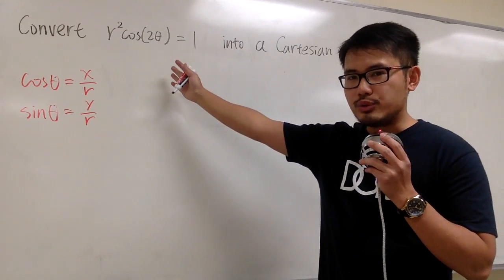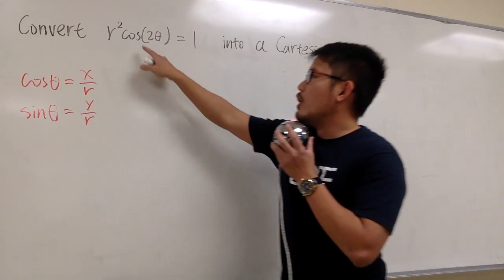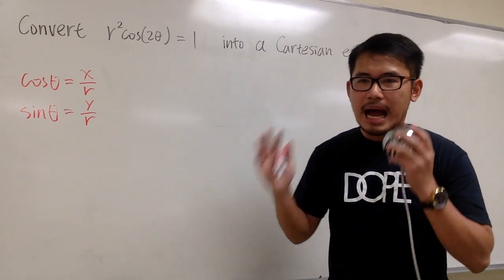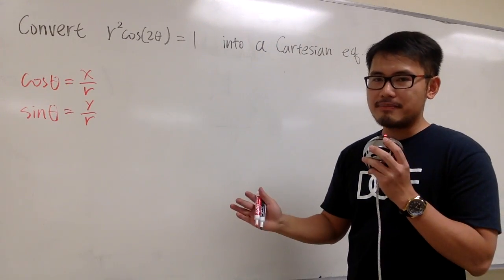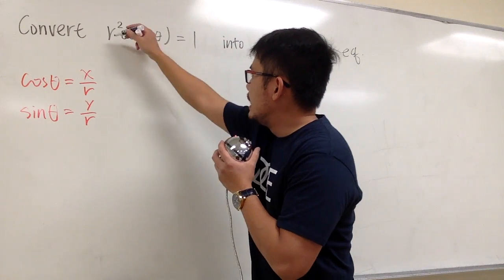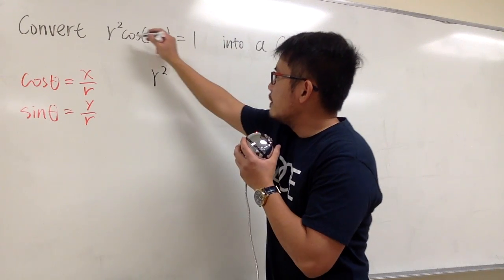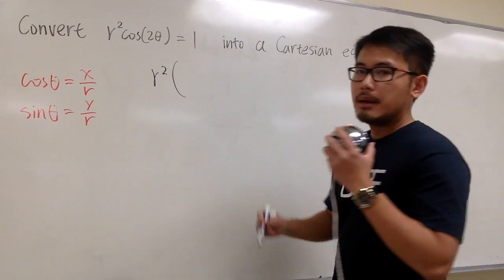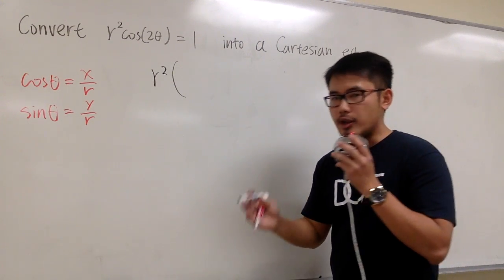But this is okay in our situation because cosine of 2 theta, we have the double angle formula for cosine. So for this equation, let me write it down right here. Let me keep the r squared to be the same. But then for the cosine of 2 theta, by the identity, we know...